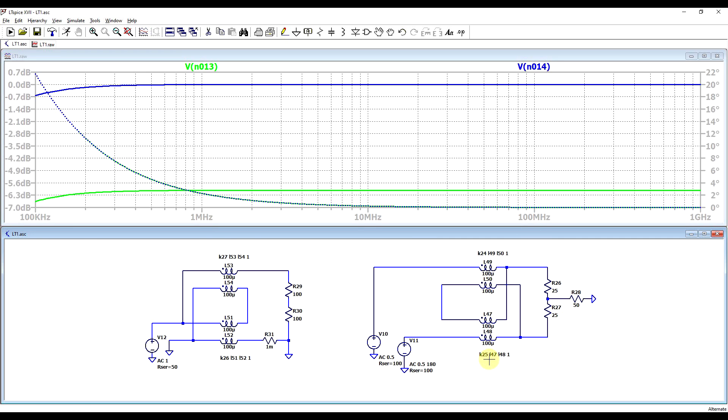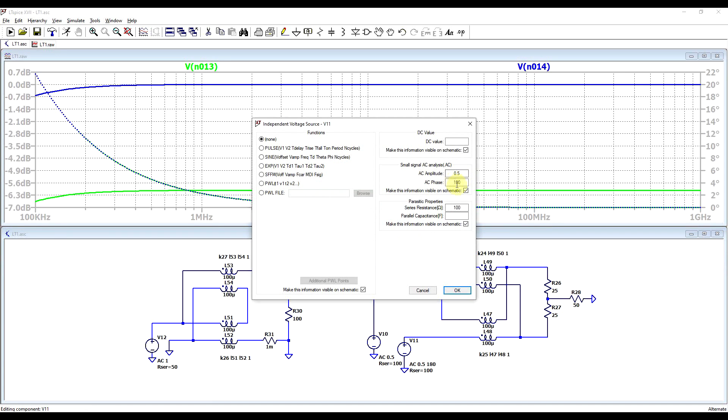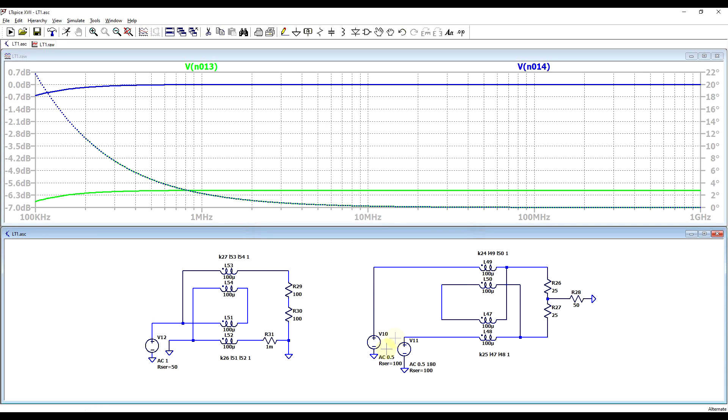Now with our second circuit, which we might be able to call a bal-bal since it's balanced to balanced, I used two signal sources that have 180 degrees phase shift, one in reference to the other, so I added in this phase shift into the small signal definition. And for the amplitude, I used 0.5 on both of them, so together they give an amplitude of 1. And the 200 ohms of signal source impedance, I divided it into two halves of 100.